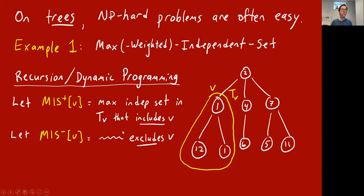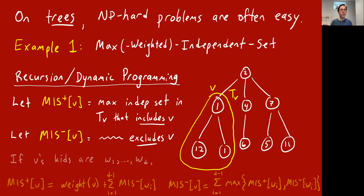What we'd like to do is fill in this table — figure out this value for every vertex v in the tree. Once we have that, we can look at the MIS values for the root. Any independent set either includes the root or doesn't, so the maximum of MIS+ for the root and MIS− for the root will be the maximum independent set we're seeking. It's easy to build this in a bottom-up fashion. For the leaves, MIS− is zero and MIS+ is the weight itself.